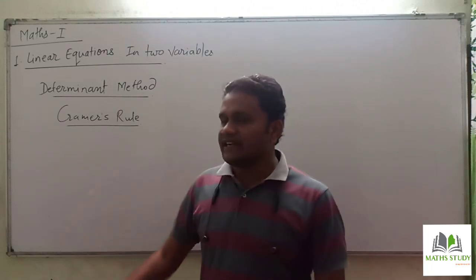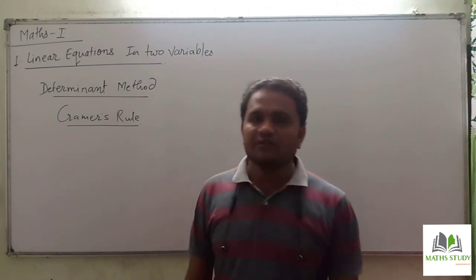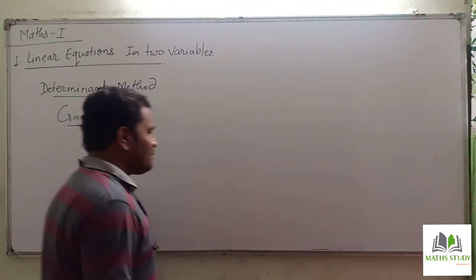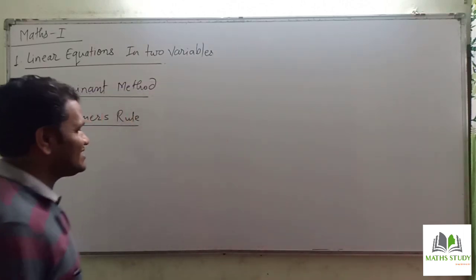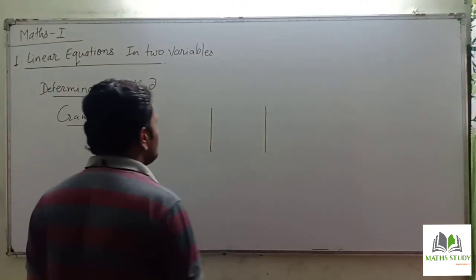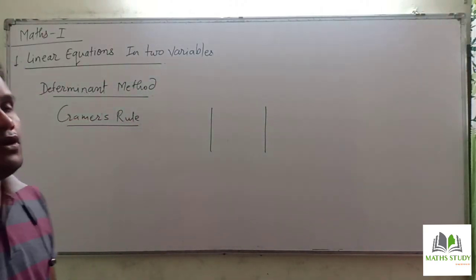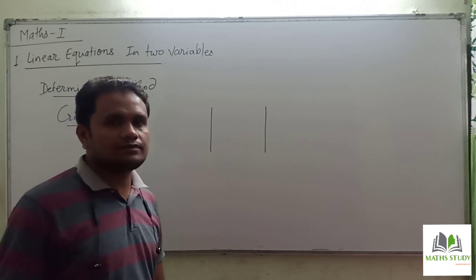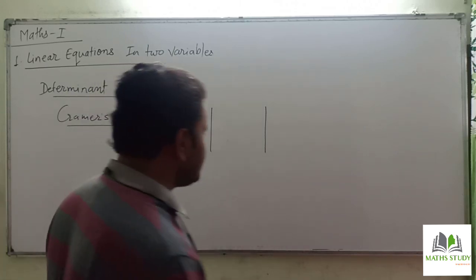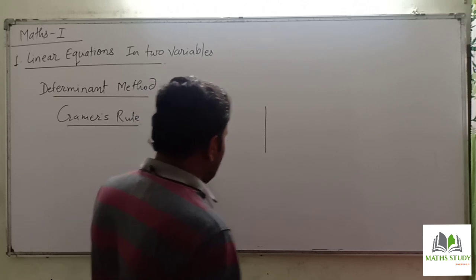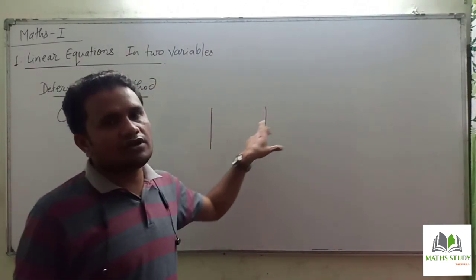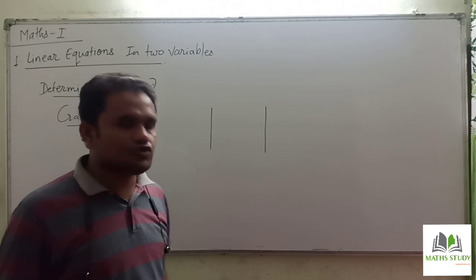This is Cramer's Rule — the determinant method. Here we use a mathematical structure called a determinant, shown by two vertical lines. When solved, its value is always obtained as a definite value.